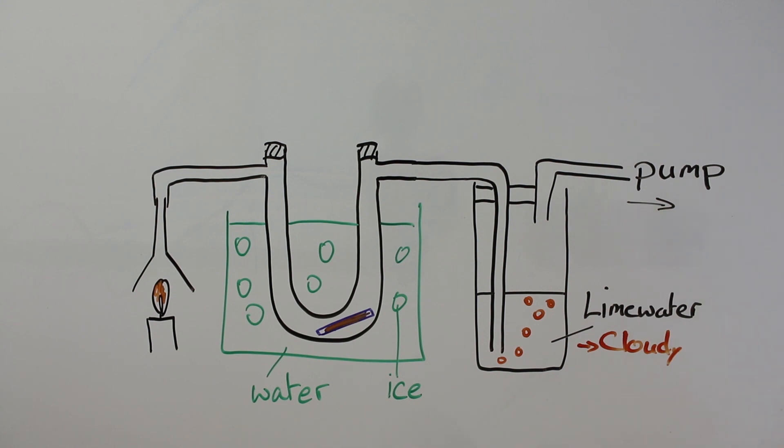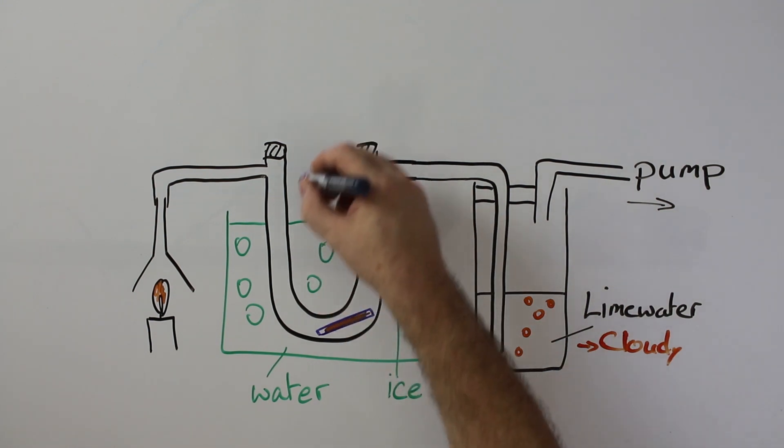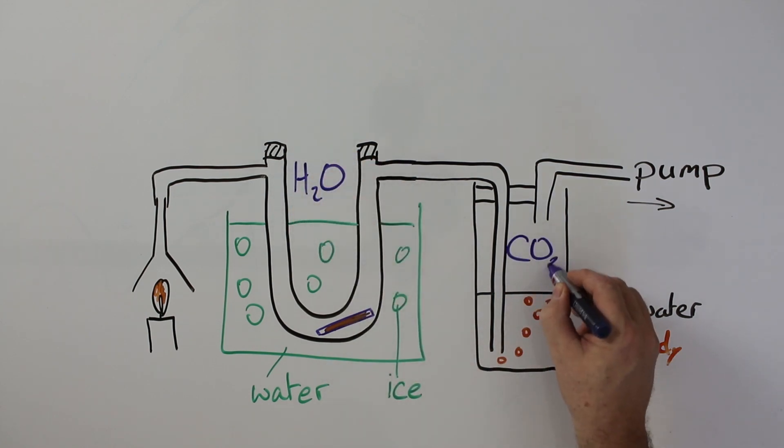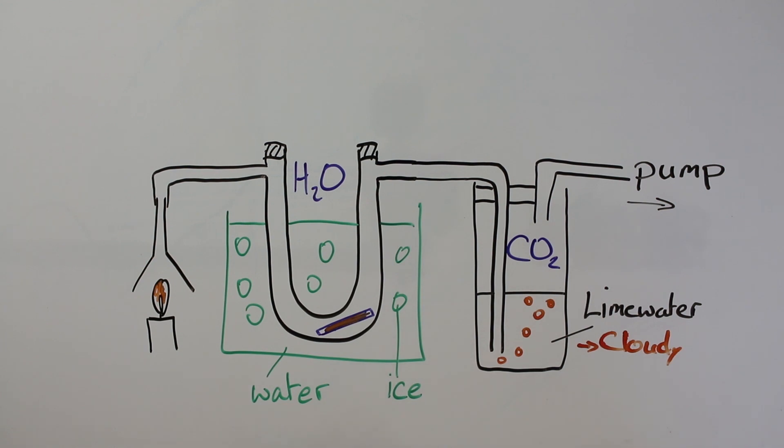So this indicates that we've got in here some water produced, and in here we've got a test for carbon dioxide. So carbon dioxide is produced.